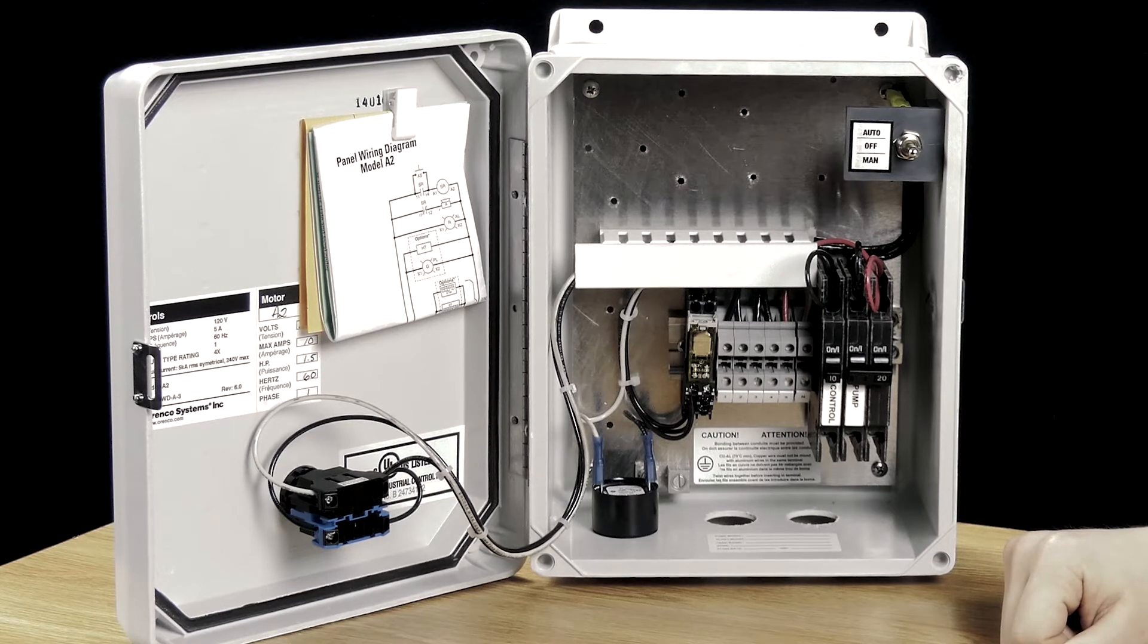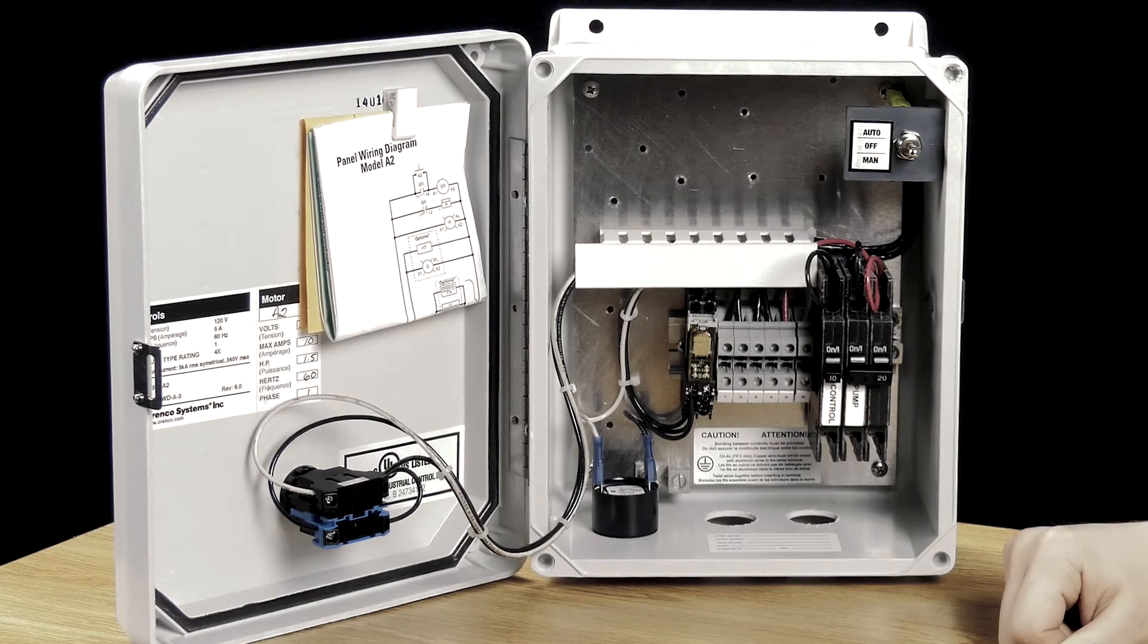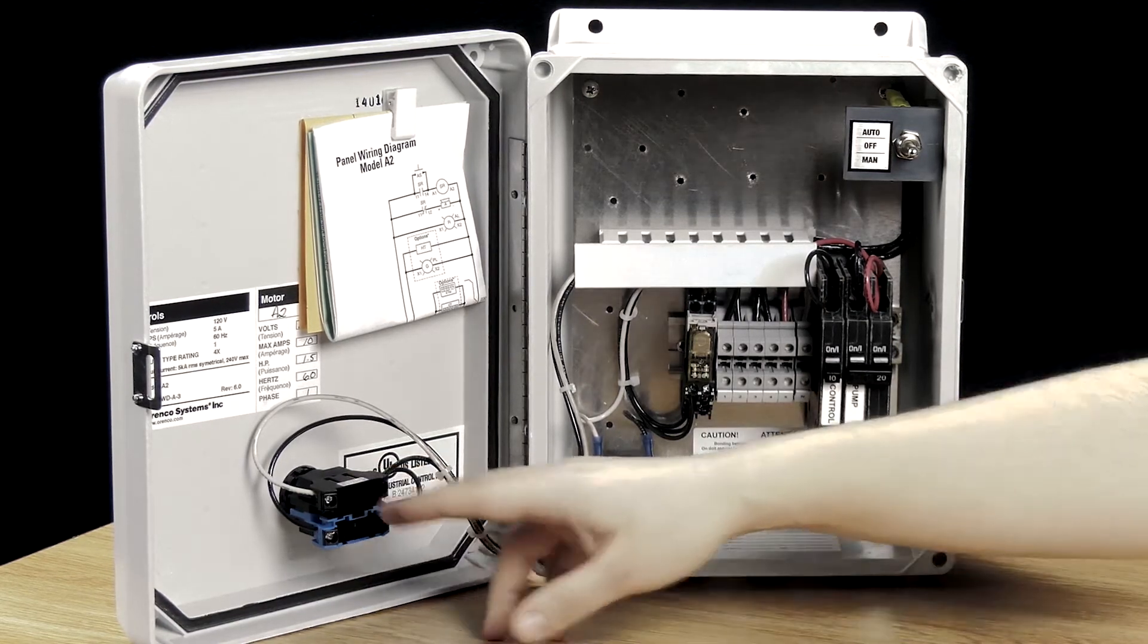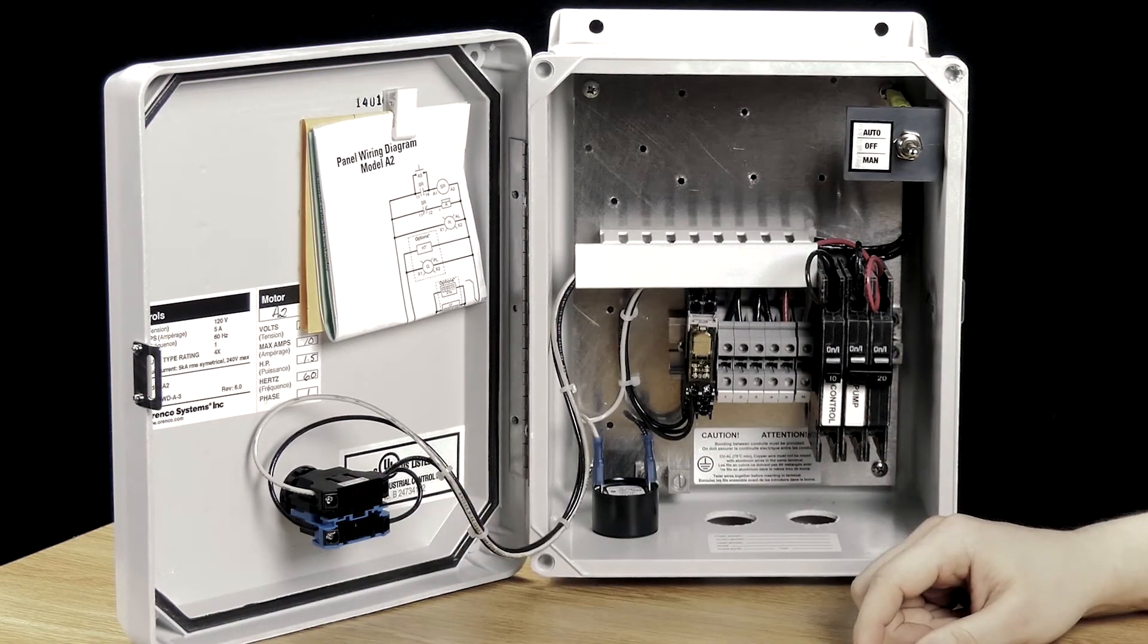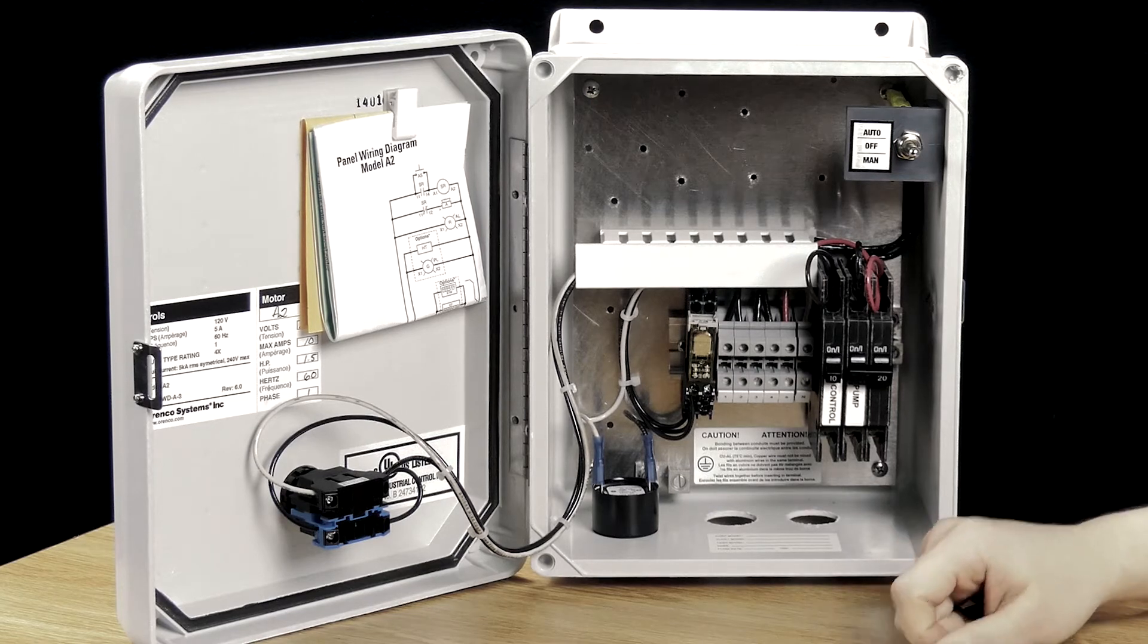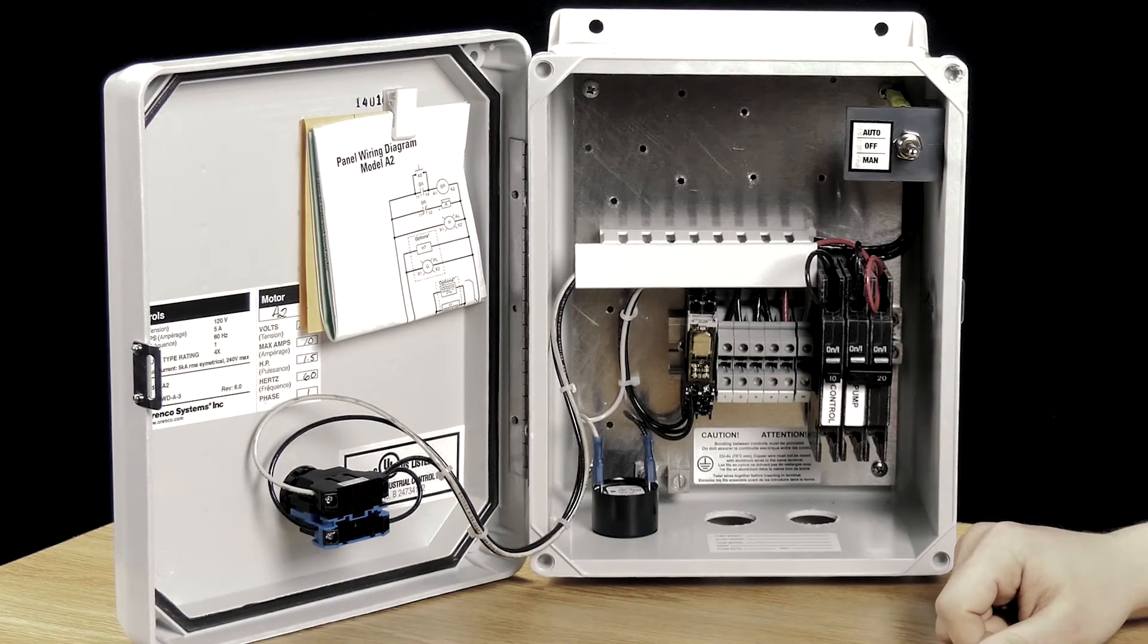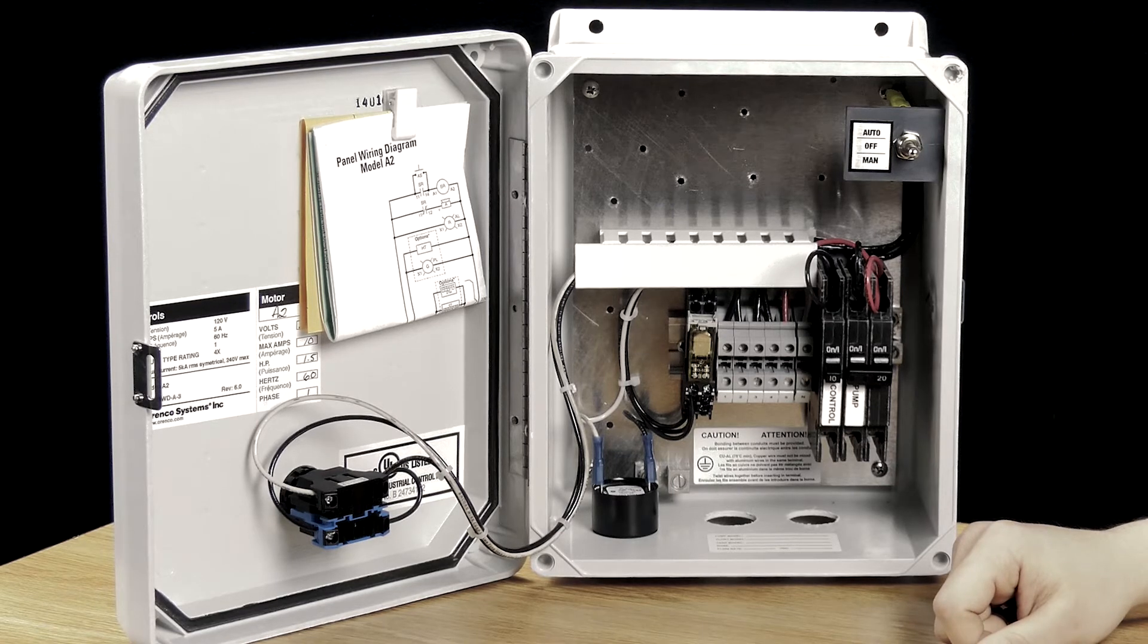It's actually rated at 95 decibels at 2 feet, so it's going to be pretty loud and you're going to hear it if you're anywhere in the vicinity. So the push-to-silence button on the front of the panel allows you to silence the panel while you kind of figure out what's going on, which is a nice feature so you don't have that blaring in your ear.